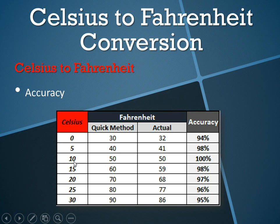For example, 10 degrees Celsius — the quick method gives 50, and the actual is 50 degrees Fahrenheit as well. That's 100% accuracy. Towards the extreme, 30 degrees Celsius by the quick method is 90 degrees, the actual is 86, but that's still 95% accuracy.